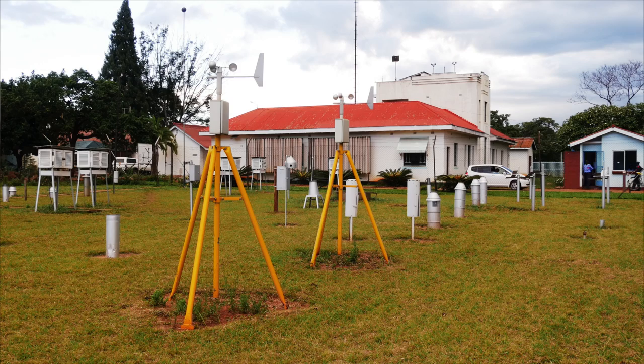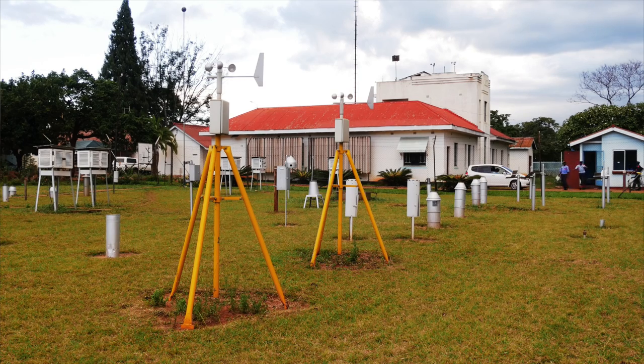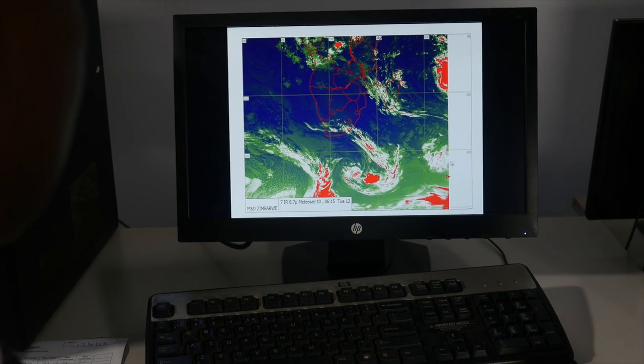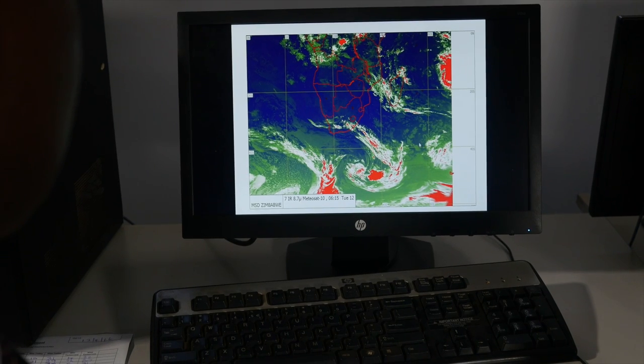The global models that we used to use for forecasting used to be at an 80-kilometer resolution, but now with the coming in of HPC, we are able now to narrow down to 4-kilometer resolution.